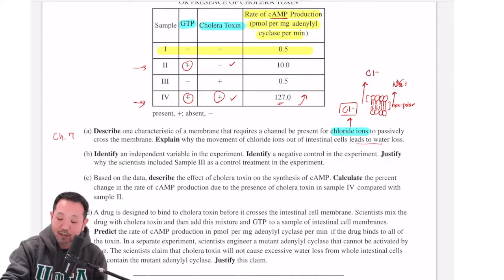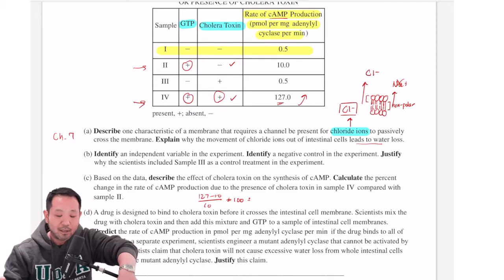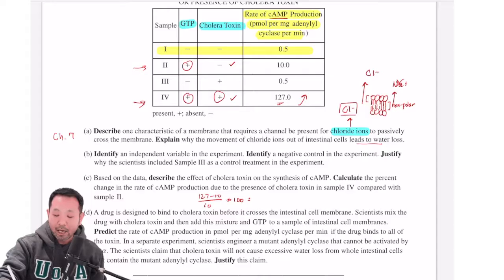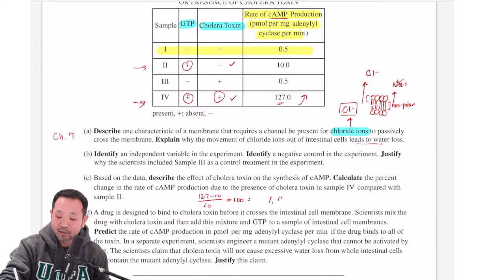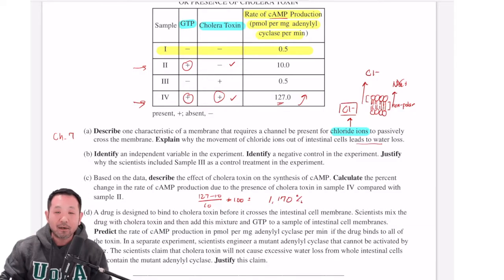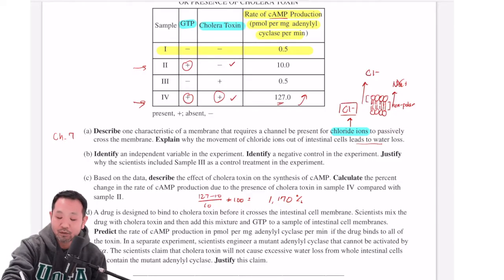So you can do that for the first part. Now, the second part says calculate the percent change. It's going to be 127 minus 10 divided by 10 multiplied by 100 to give us that percentage. I'll do this math right now. A few moments later. Okay, so the math turns out to be 1170%, which means it's about 12 times higher than it's supposed to be normally. And as you can see from 10 to 127,